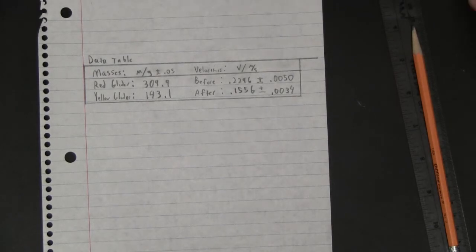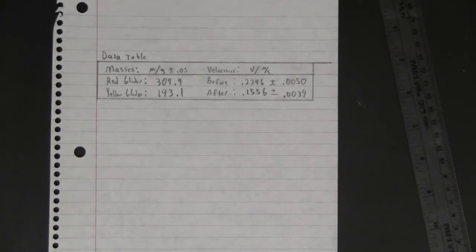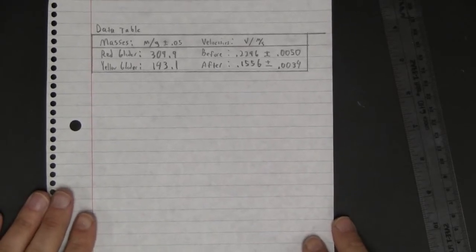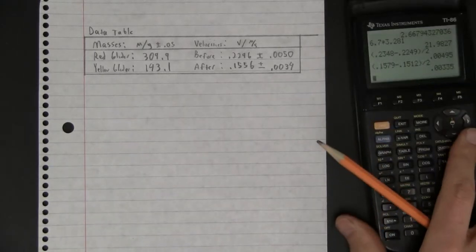Okay, now I'm going to show you how to do the calculations, and there's actually four calculations we're going to have to do. We're going to have to calculate the momentum, and we're going to have to calculate the uncertainty of that momentum. So I'm going to show you how to do both of these things.